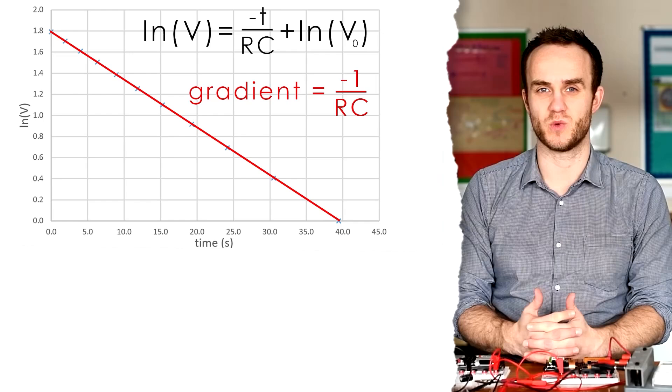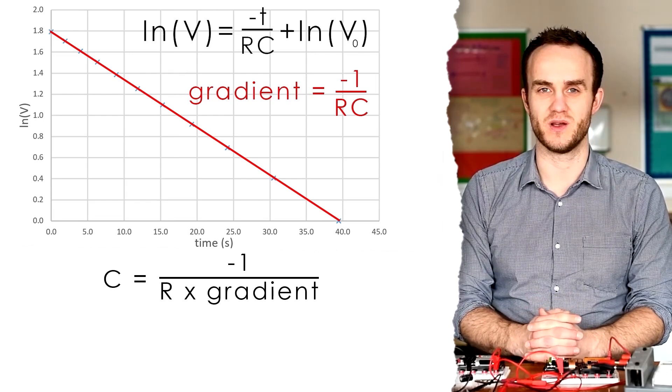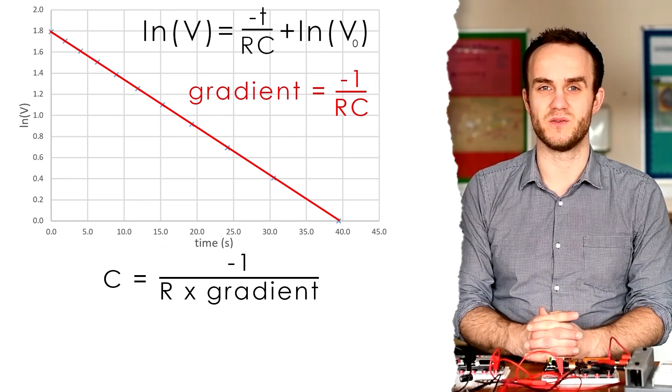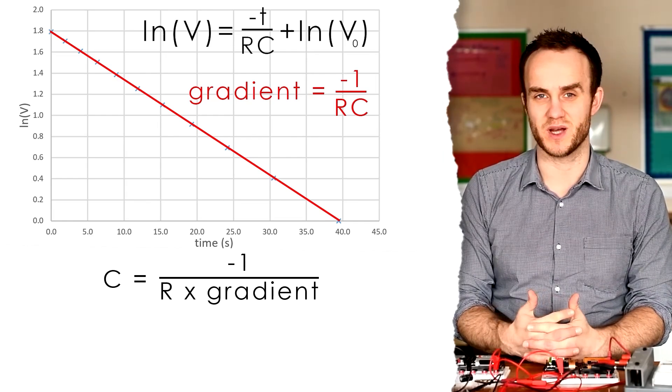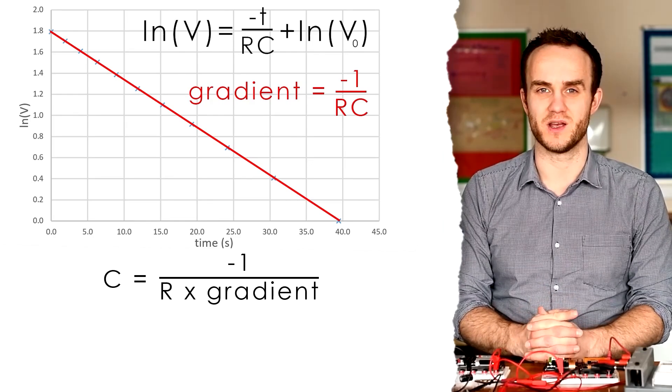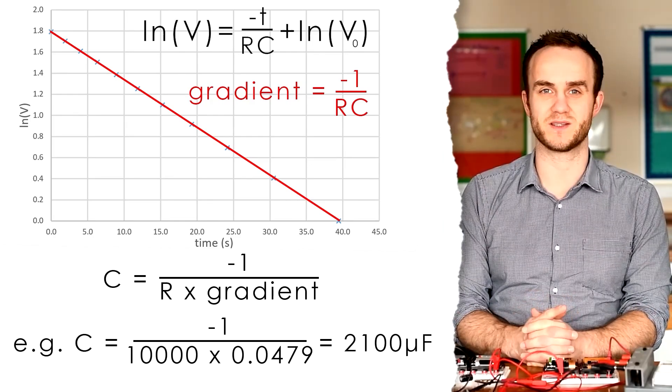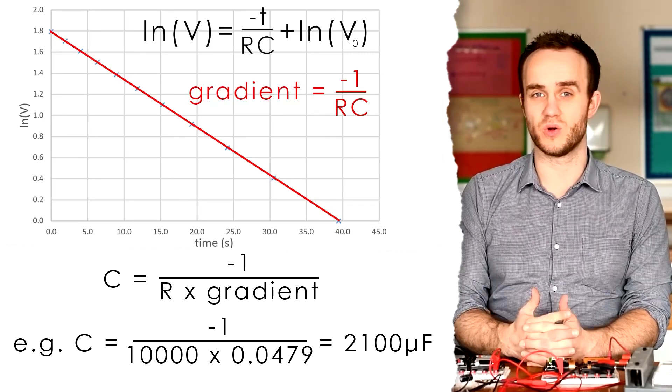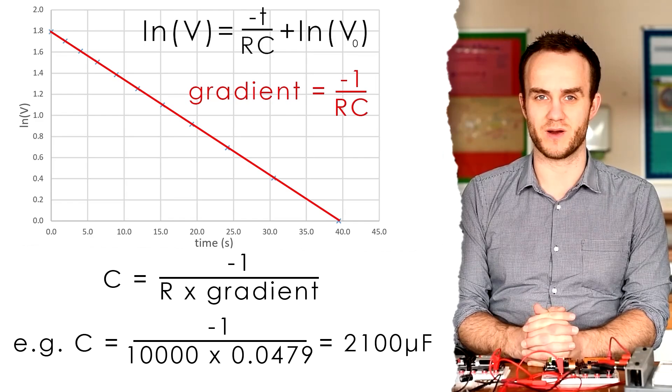So to find our capacitance, all we do is swap capacitance and the gradient over. So capacitance is equal to minus 1 over resistance times the gradient, which is a minus number as well. So we can just say 1 over R times the gradient. So for me, I end up with a capacitance of 2.1 times 10 to the minus 3 farads, or 2,100 microfarads.